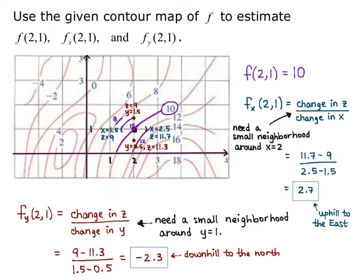So that's how we estimate our partial derivatives using a contour map. We can't get exact values, but you just build a small neighborhood either in the x direction for the partial with respect to x, or in the y direction for the partial with respect to y.